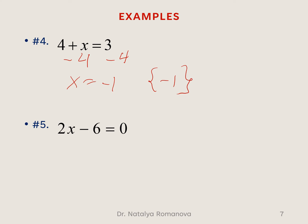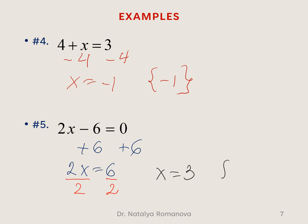Next example: 2x minus 6. To isolate x, we first add 6 to both sides of our equation, giving 2x equals 6. Then we divide both sides by 2, giving x equals 3. So 3 is the answer for our equation.